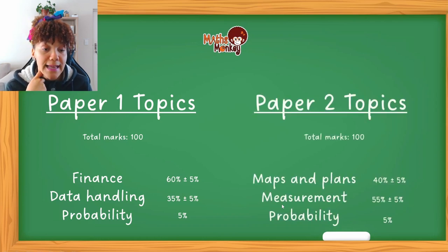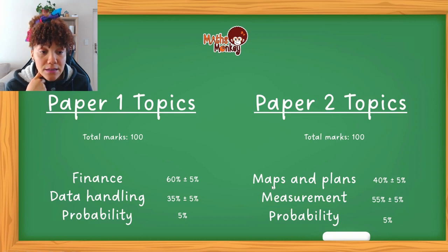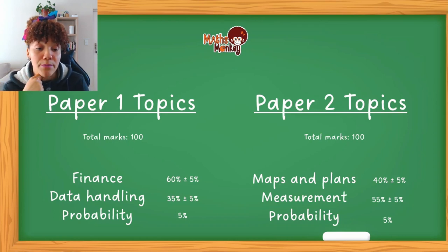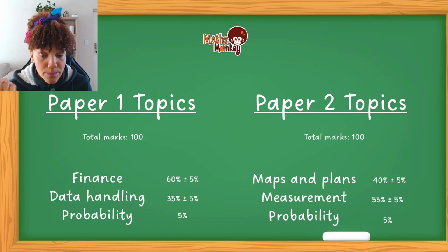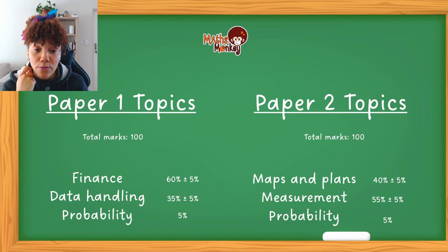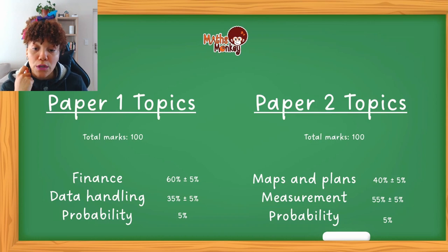Paper Two's topics — this is also out of 100. Maps and plans is between 45 and 55 marks, measurement will go from 50 to 60 marks, and probability is 5 marks. I want you to look at these and make sure that the time you're investing in studies is gauged according to these mark allocations.